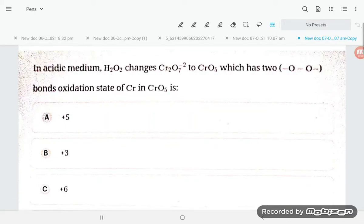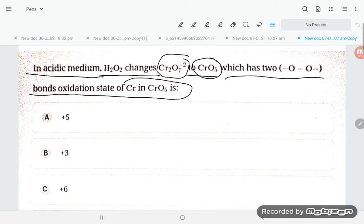Hi students, let's try to understand one problem. In acidic medium, H2O2 changes dichromate ion Cr2O7²⁻ to CrO5, which has an O-O bond. What is the oxidation state of chromium in CrO5? When you talk about CrO5, it is the butterfly structure.